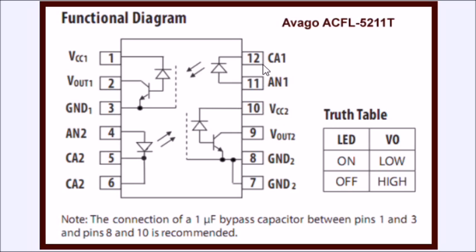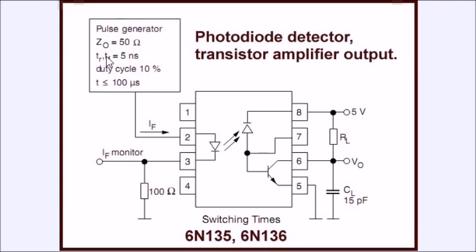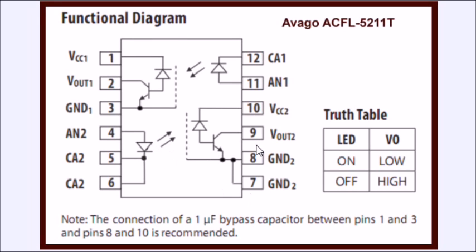This is another unit. This is the Avago AFCL 5211T. It's a dual unit. Does the same thing as our 6N135 does, but it's two units in the same package. Like I said, you would use these for high speed, detecting high speed sensors and so forth. This gives you better frequency response, assuming that you have a microcontroller that can handle it. And many of them can.